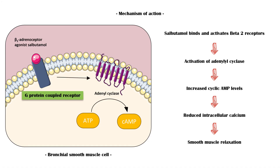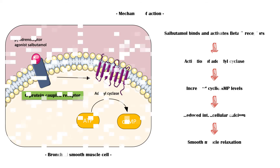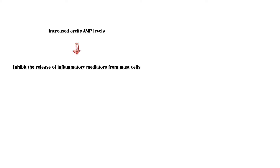Through this mechanism, salbutamol causes relaxation of smooth muscles of all airways, from the trachea to terminal bronchioles. In addition, increased cyclic AMP levels will inhibit the release of inflammatory mediators by the mast cells, which ultimately reduces inflammation.